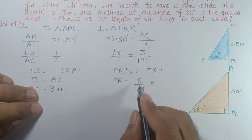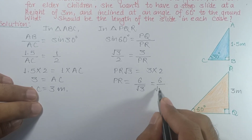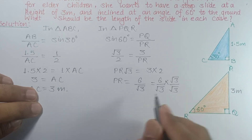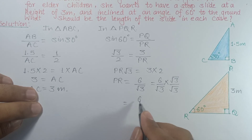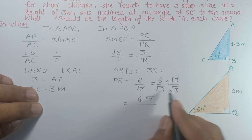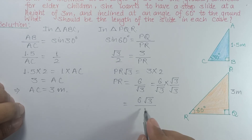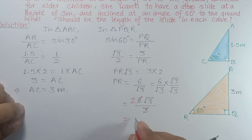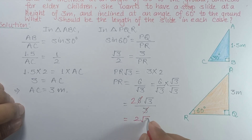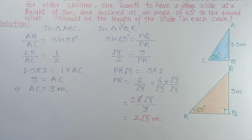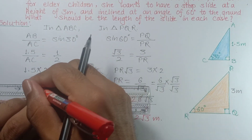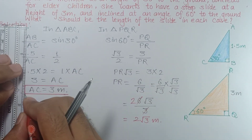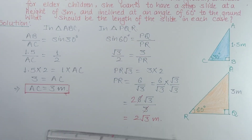To simplify 6/√3, multiply numerator and denominator by √3 to rationalize: 6√3 upon (√3 × √3) = 6√3/3. Canceling out, the final answer is 2√3 meters. So the first slide has a length of 3 meters and the second slide has a length of 2√3 meters.